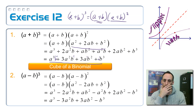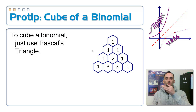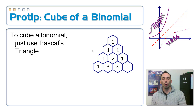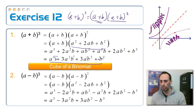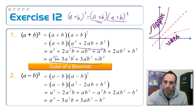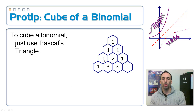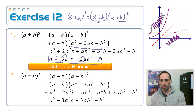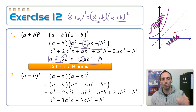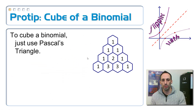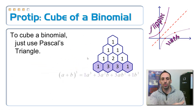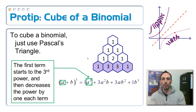To cube a binomial, we're going to use Pascal's triangle — remember that thing we started with? The numbers in Pascal's triangle are 1, 3, 3, 1 for the third row. Looking back at our result, the coefficients are indeed 1, 3, 3, 1. And look at the row above it: 1, 2, 1 — those are the coefficients of the square of a binomial. Pascal's triangle gives us the coefficients of each term. For cubing, the coefficients are 1, 3, 3, 1.